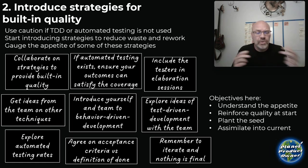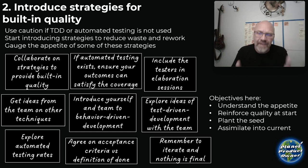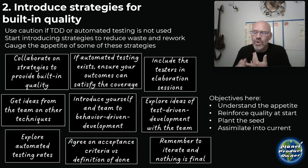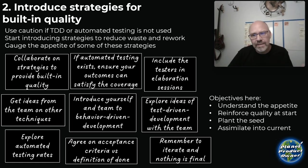Acceptance criteria and definition of done are two different things — I've got another video on that. It's important to start acknowledging that you've adopted this thing and maybe it's time to make it your own. You want testers in the elaboration sessions exploring ideas, and remember that nothing is ever final — we can always iterate. Your objectives for this built-in quality strategy are understanding the appetite, reinforcing quality from the start, setting that expectation, planting a seed, and assimilating into what they currently offer.